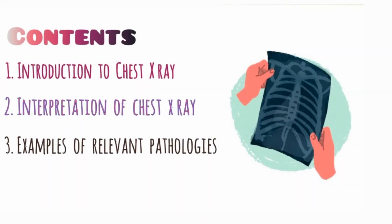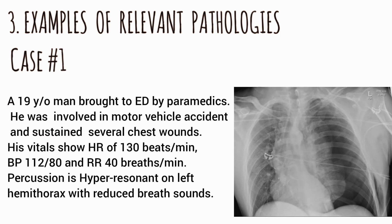We're done with the introduction and interpretation. Now let's move on to examples of lung pathologies in chest trauma. Here's the first scenario — read it thoroughly, try to apply the information to the radiograph, follow the A2H order, and then come up with the diagnosis without jumping to conclusions.